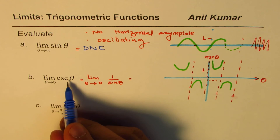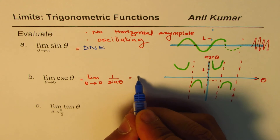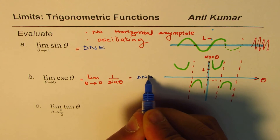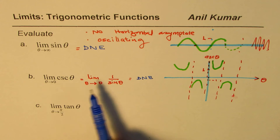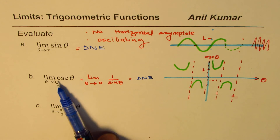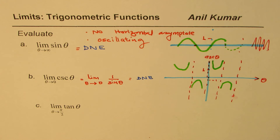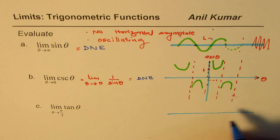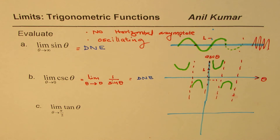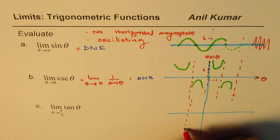Therefore, the limit for cosecant theta as theta approaches 0 does not exist. For reciprocal functions, since the limit of sine theta implies that the limit of cosecant theta when theta approaches 0 does not exist. That should help you to find limits of trigonometric functions.